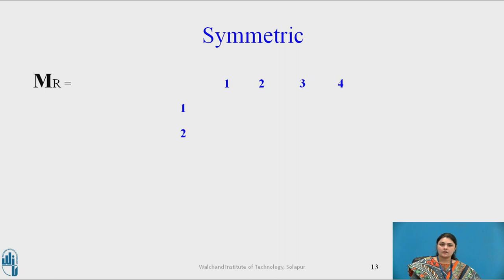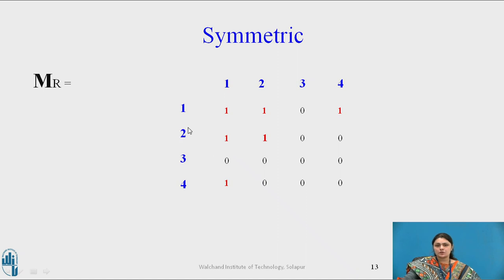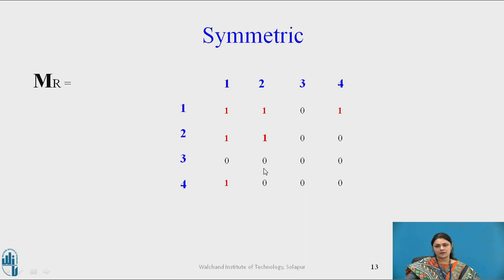For symmetric, R(i,j) equals R(j,i) for every i and j — both elements should be equal. For example, element (1,1) is 1, so its inverse (1,1) is also 1. Taking another example: if (2,1) is 1, it means (1,2) should also be 1. If this is the case, the matrix is said to be symmetric.